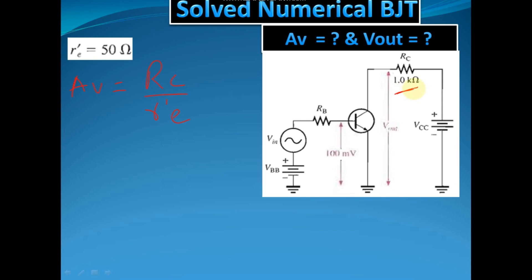And what is r'e? r'e is internal AC emitter resistance. That is why it is represented in small letters. So the value of Rc is 1 kilohm and the value of r'e equals to 50 ohms.